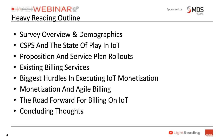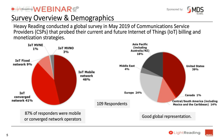The survey was carried out in May of 2019 and it covered 109 respondents from communication service providers on a global basis. We probed their current and future internet of things billing and monetization strategies. We were lucky enough to get 87% of the responders being mobile or converged network operators. Of those that responded, 39% were in the US, 24% in Europe, 18% in the Asia Pacific area including Australia and New Zealand, 14% from Central South America and the Caribbean, 4% from the Middle East, and 1% from Canada.